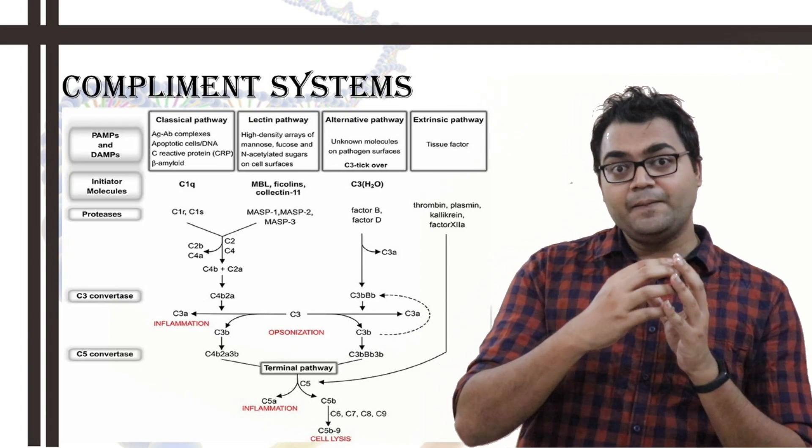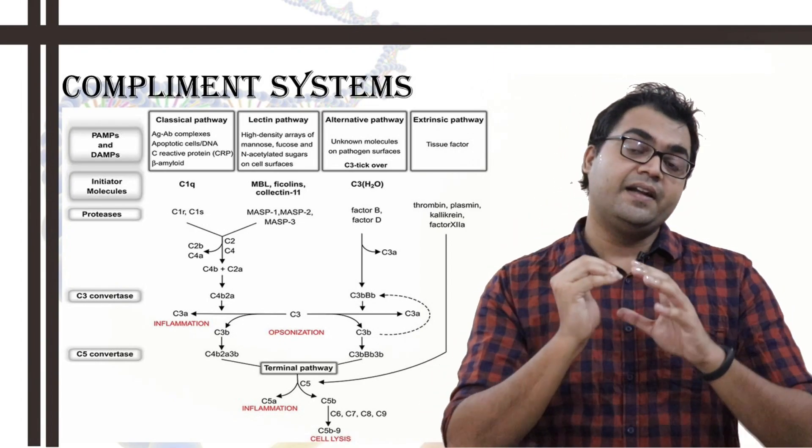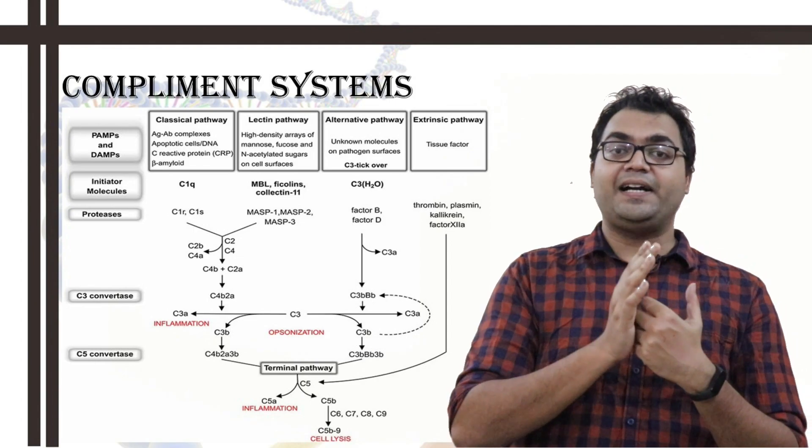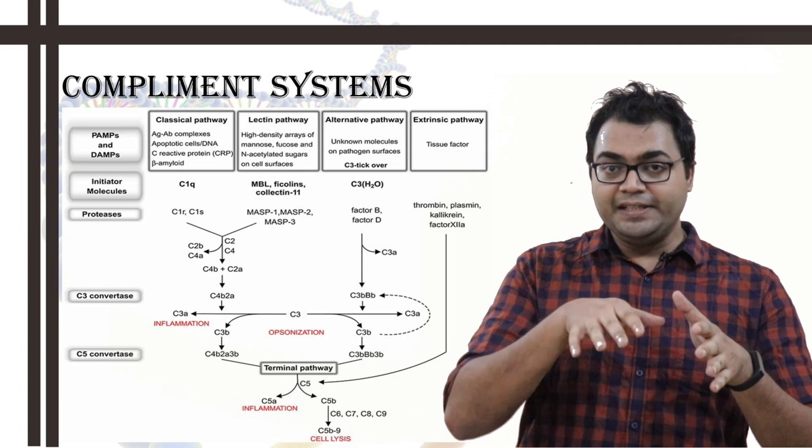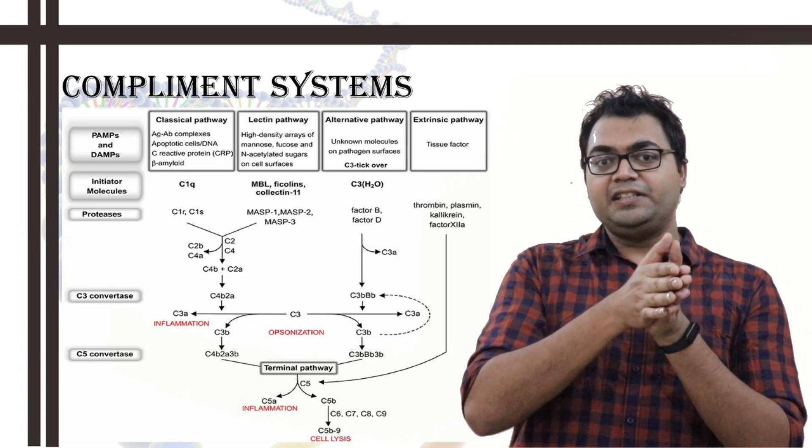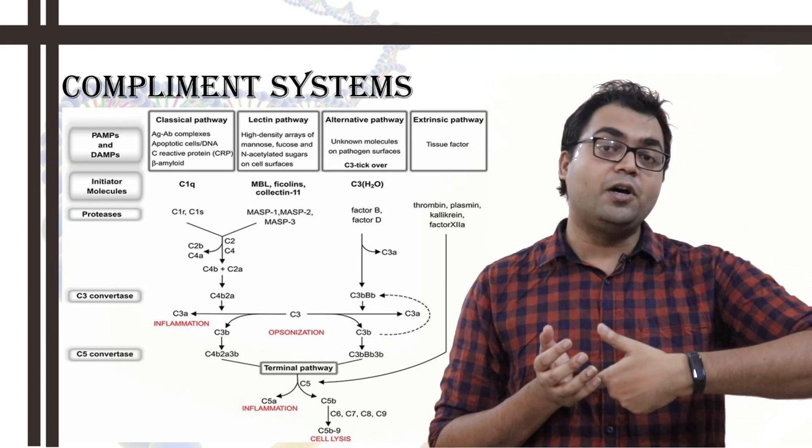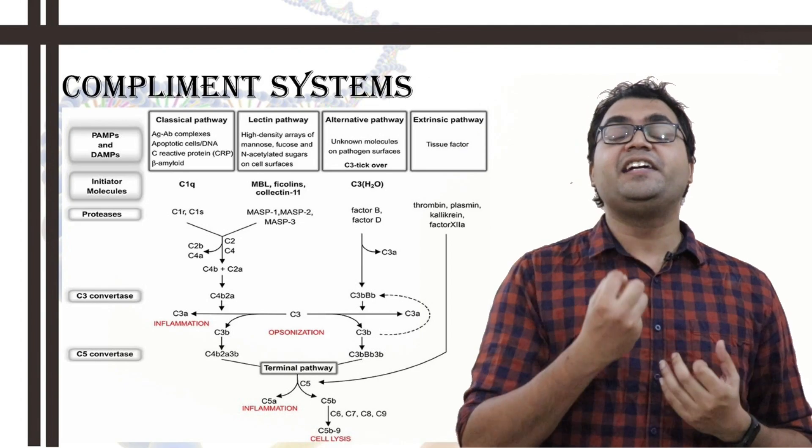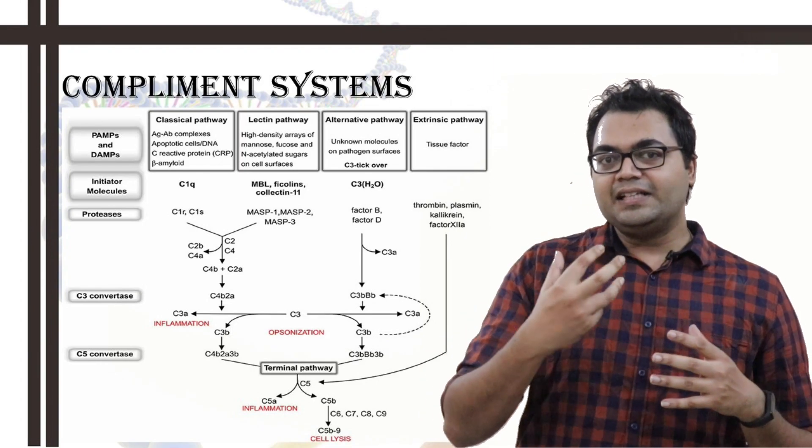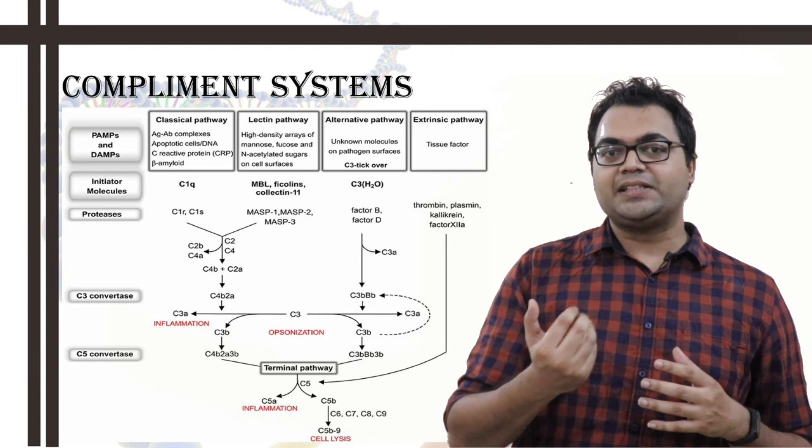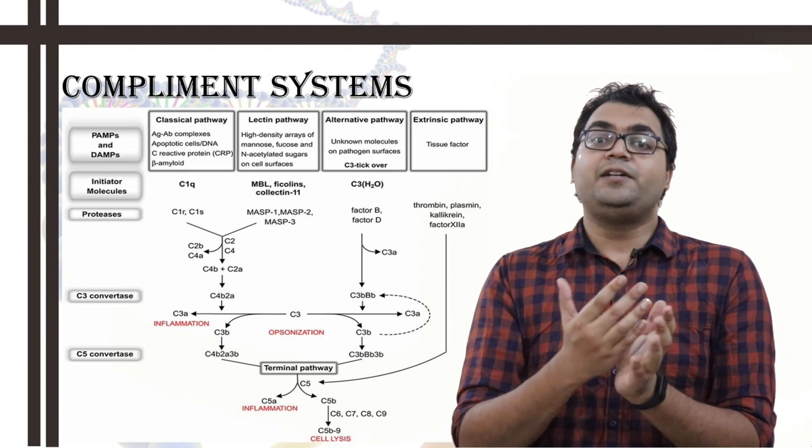After it binds to factor B, factor D can recognize factor B. And then factor D is again a protease which cleaves factor B into Ba and Bb. Ba is a smaller fragment which washes off. And Bb remains bound to C3H2O and becomes a complex, C3H2OBb. Now, C3H2O capital B small b contains the C3 convertase activity, which is in the liquid phase. The liquid phase C3 convertase is the C3H2O capital B small b.